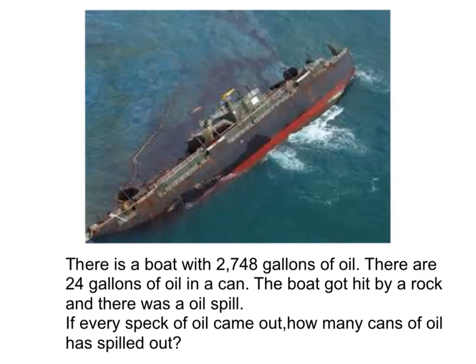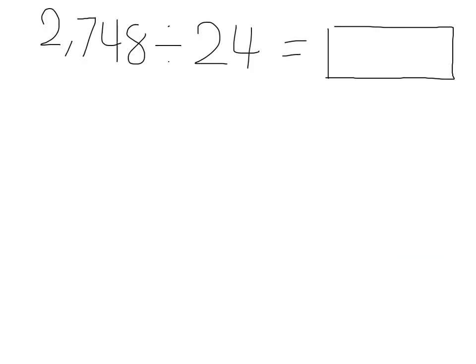There is a boat with 2,748 gallons of oil. There are 24 gallons of oil in a can. The boat got hit by a rock and there was an oil spill. If every speck of oil came out, how many cans of oil has spilled out? We are going to show this situation with an equation.